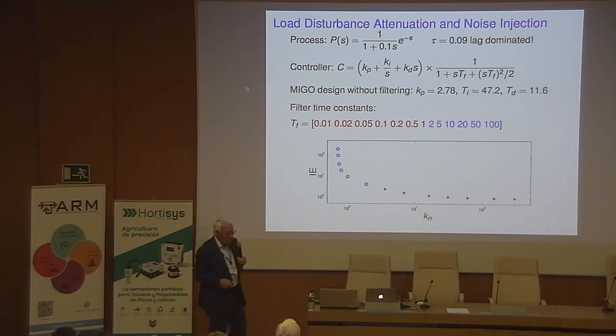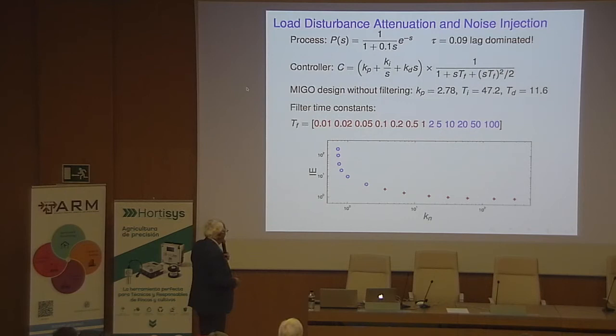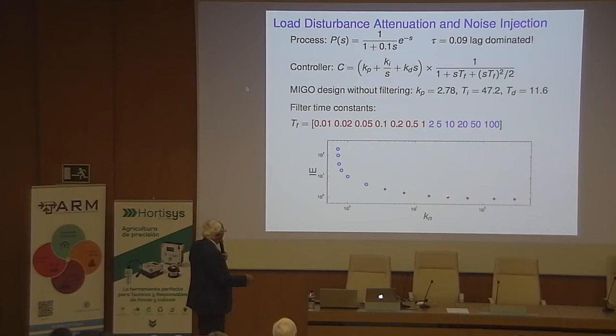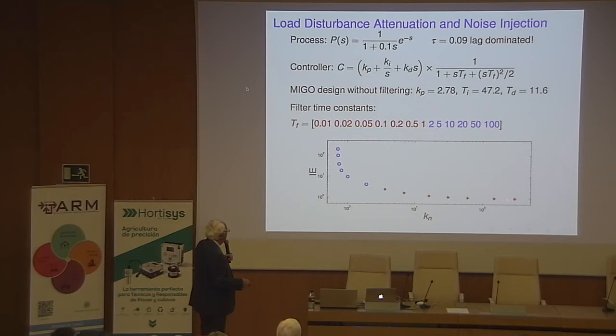For measurement noise versus load disturbance trade-offs with a PID controller: as you change the filtering time constant, increasing filtering reduces noise gain but increases integrated error. Without any filtering, you have a very high noise gain. Filtering quite a lot doesn't increase IAE much until suddenly the controller becomes a PI controller. If you can admit a noise gain of about 10, you're well off. But if you have very high noise, you may be forced to noise gain of about one, and then you might as well use a PI controller.